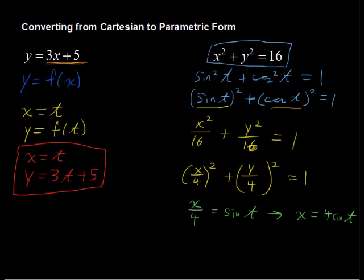And I'll say that y over 4 equals cosine of t. So then that would leave us with y equals 4 times cosine of t.